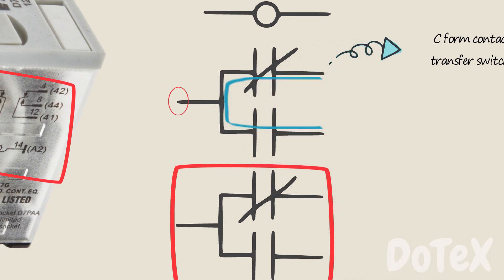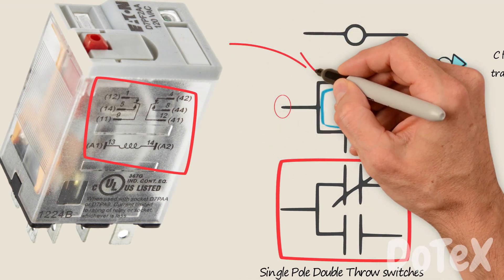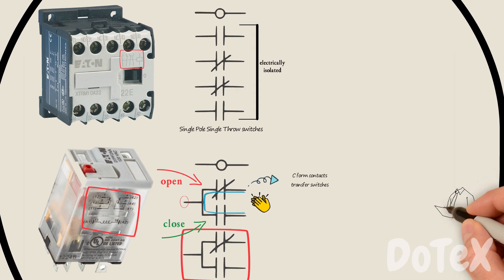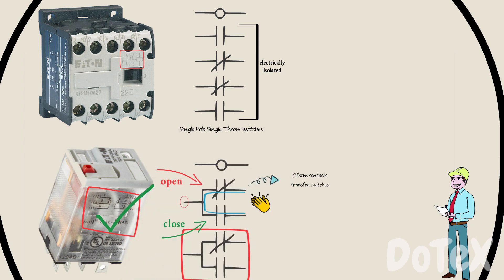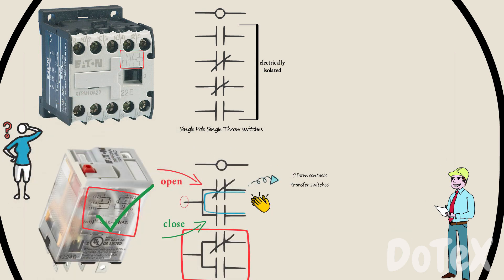Can you see why they are called C form contacts? Perfect. When one side is open, the other side is closed and vice versa. Manufacturers sometimes use a single pole double throw switch symbol to make the transfer function very clear to the user.